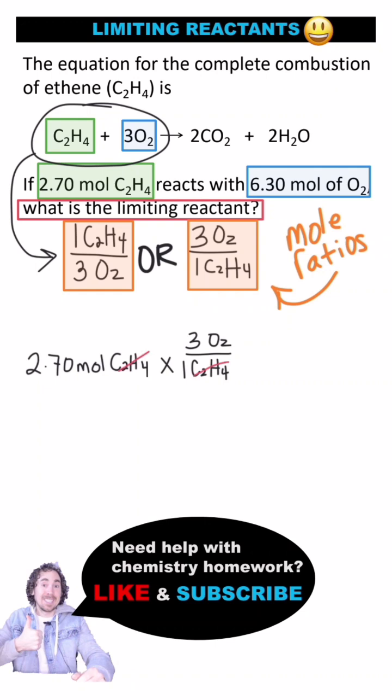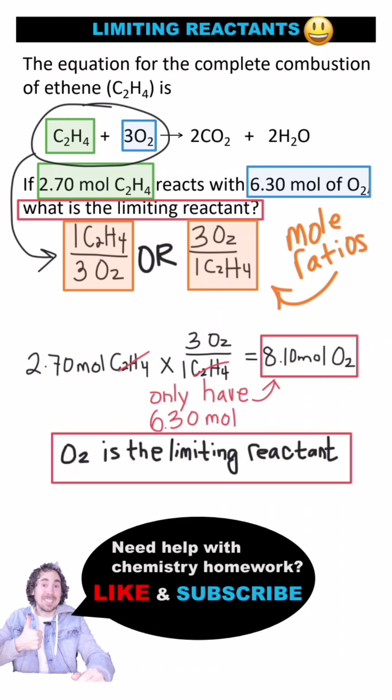So if all 2.7 moles of ethene reacts, 8.1 moles of O2 is required. However, we only have 6.3 moles of O2, not 8.1. This means that O2 is the limiting reactant and ethene is in excess.